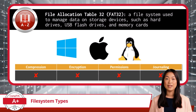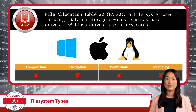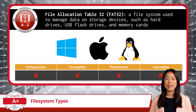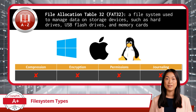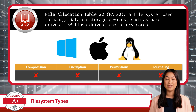Next, let's talk about the File Allocation Table 32, or FAT32 file system. This file system is known for its compatibility with various devices and operating systems, including multiple Windows generations, Linux, and Mac OS. FAT32 is commonly used to manage data on storage devices such as portable hard drives, USB flash drives, and memory cards, because it can be read and written across multiple operating system types. However, FAT32 does not support file compression, encryption, or advanced permissions, and it also lacks journaling, making it less reliable for data integrity compared to more modern file systems.